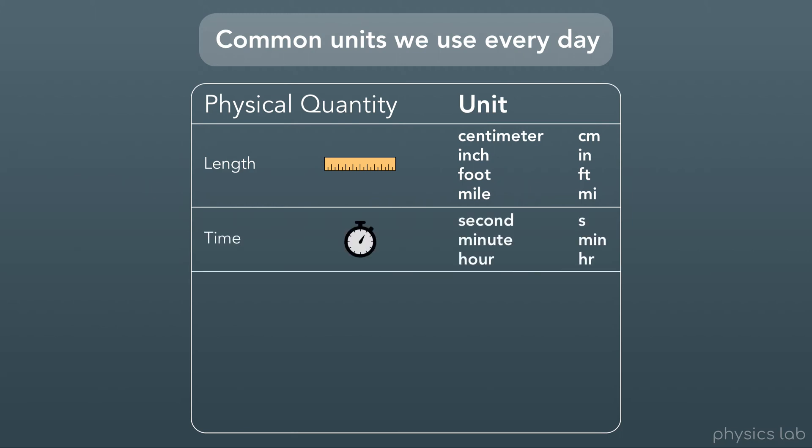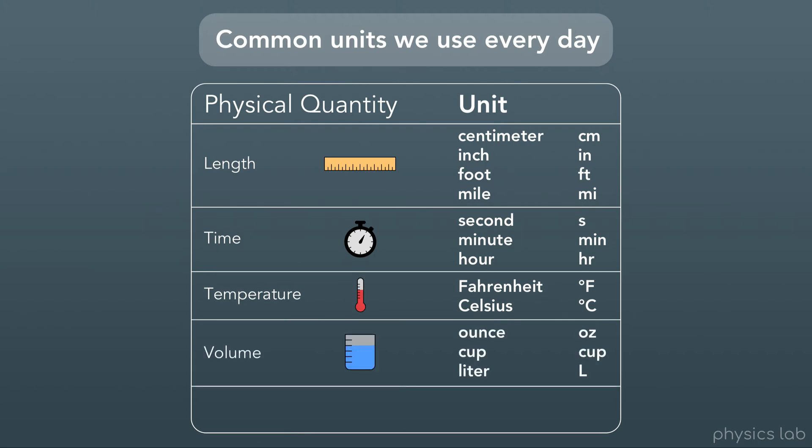For time, we might use seconds, minutes, or hours. For temperature, we could use degrees Fahrenheit or degrees Celsius. For volume, we might use ounces or cups, or we might use liters. And even for money, we might use different units like dollars and cents.